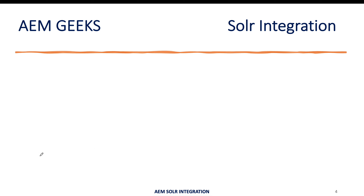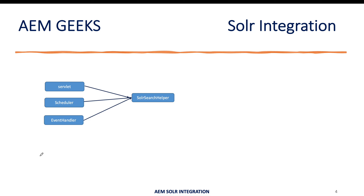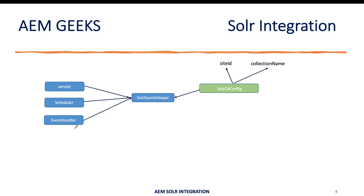At a high level, the servlet, scheduler, and event handler are used as separate use cases. I'll create an object of the SolarSearchHelper class in every module. I have multiple constructors, so I'll use a different one in each module. Once I have the object, I'll get the Solr context-aware configuration containing my site ID and collection name — a particular configuration will be retrieved based on which website you are running the functionality for.